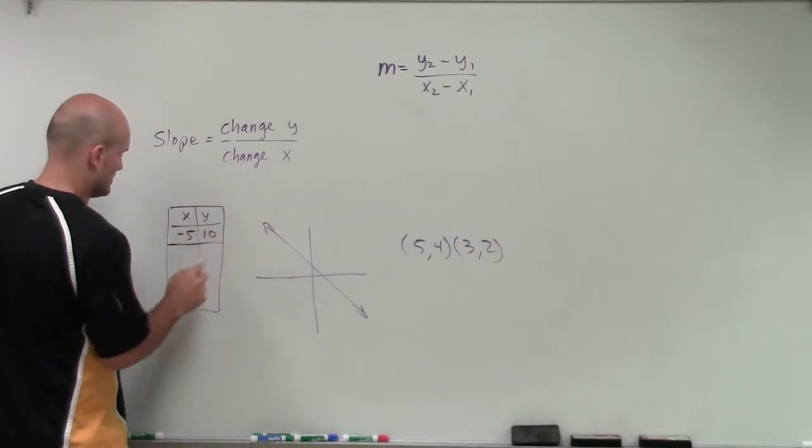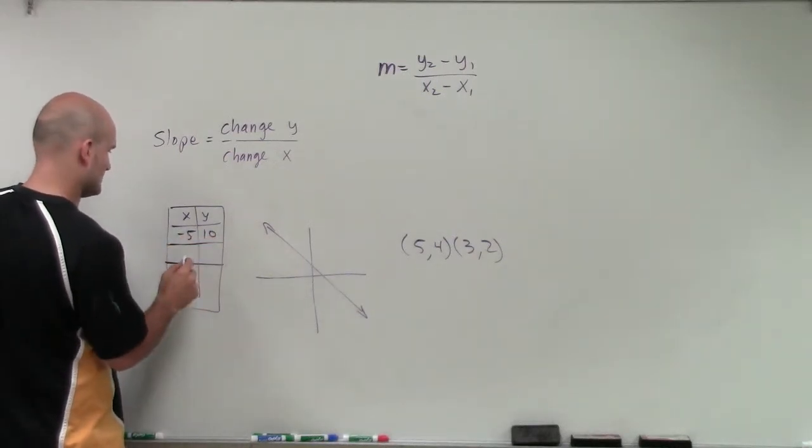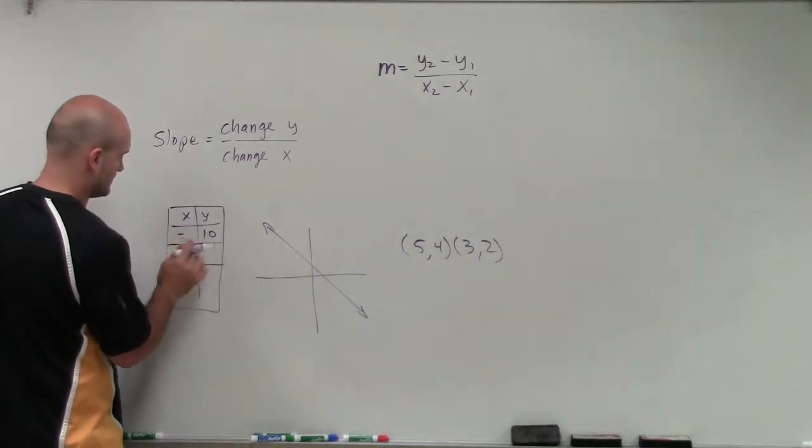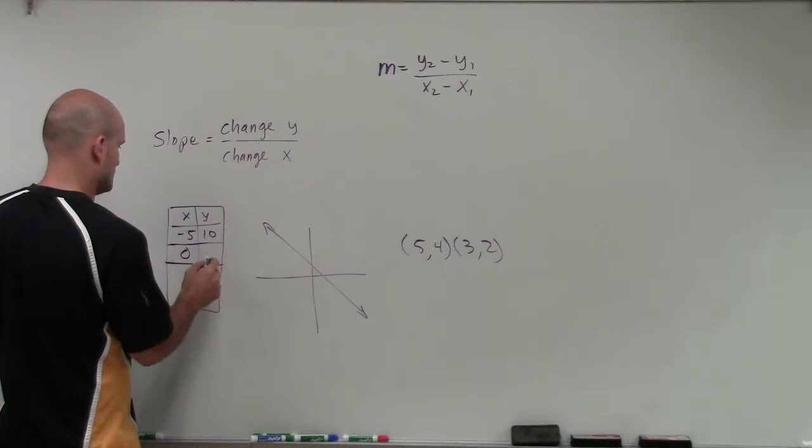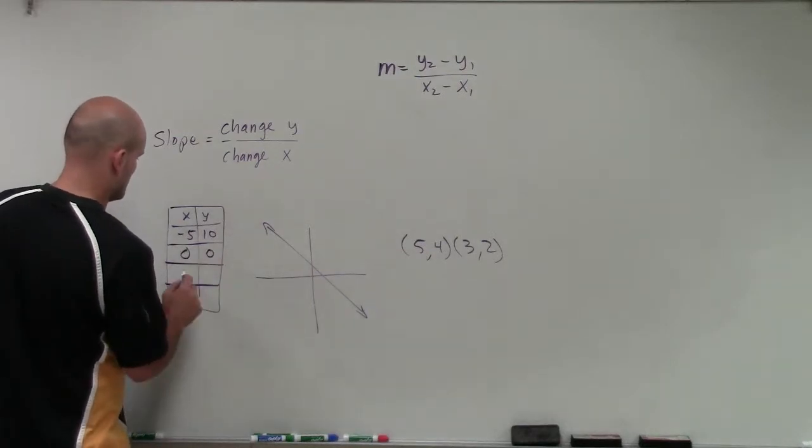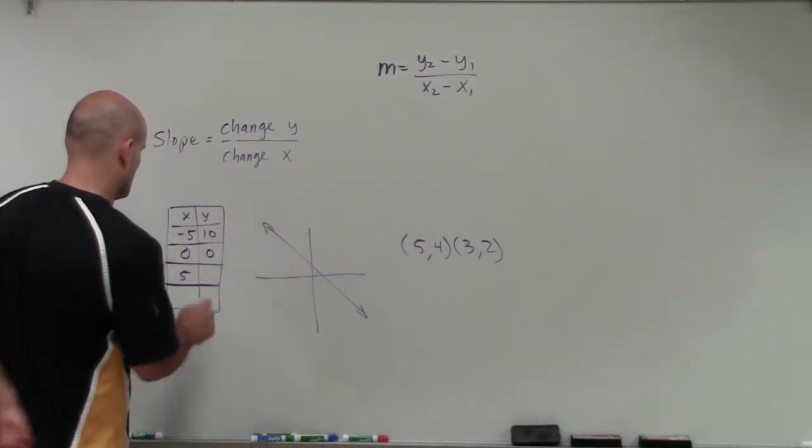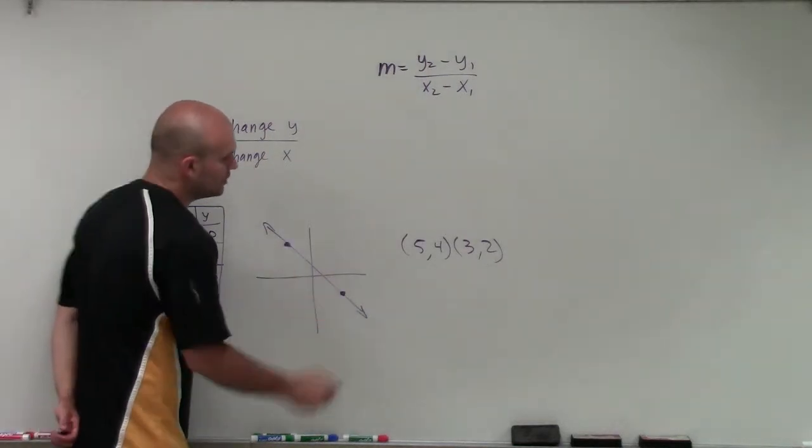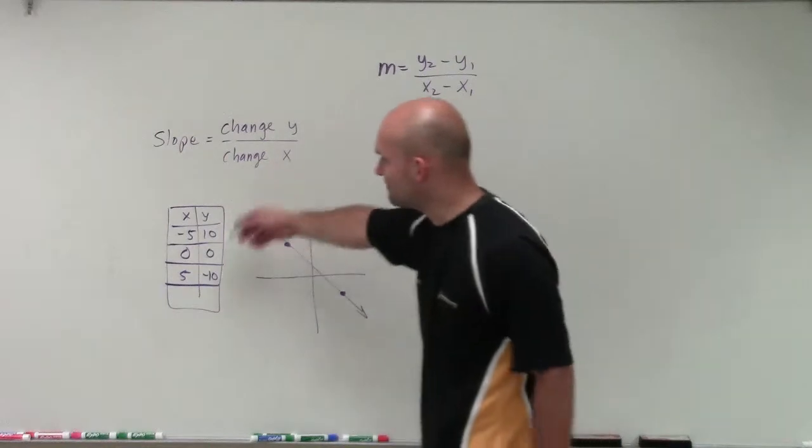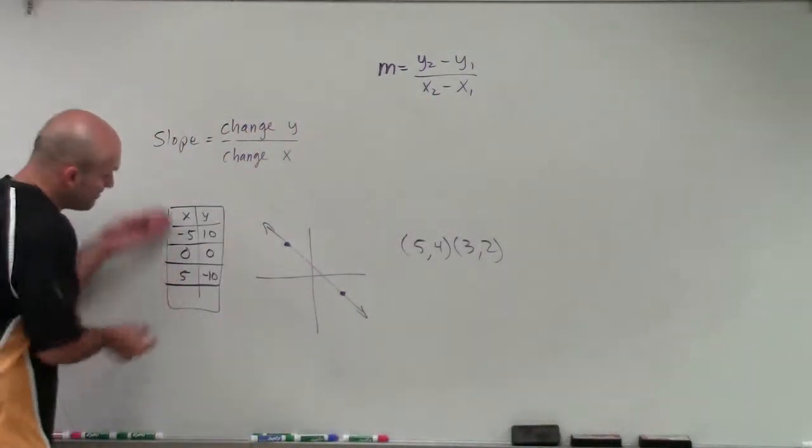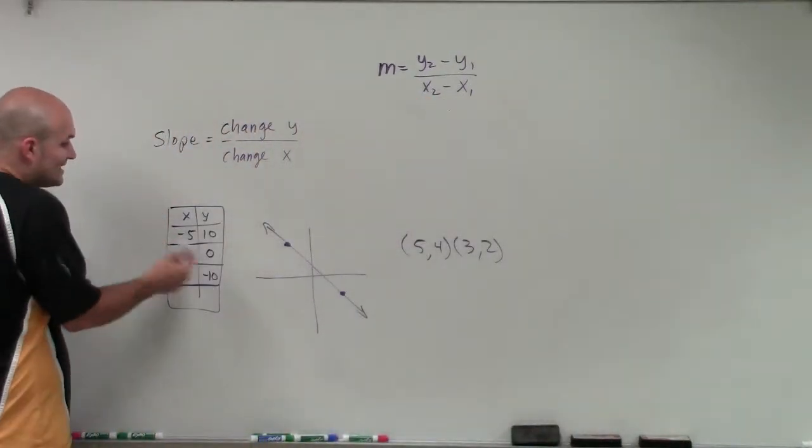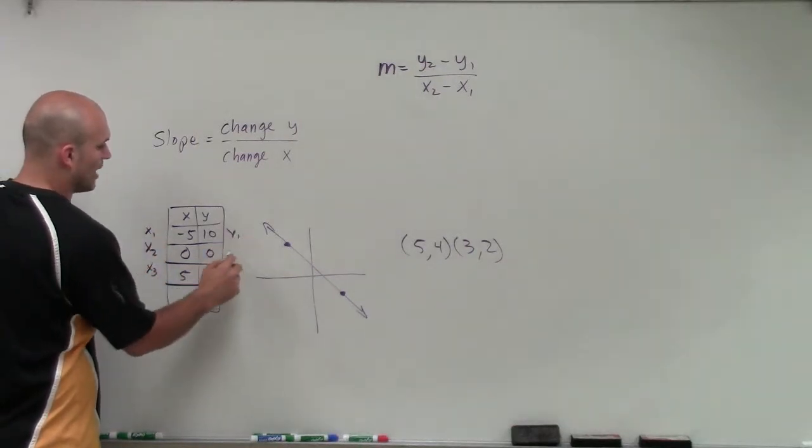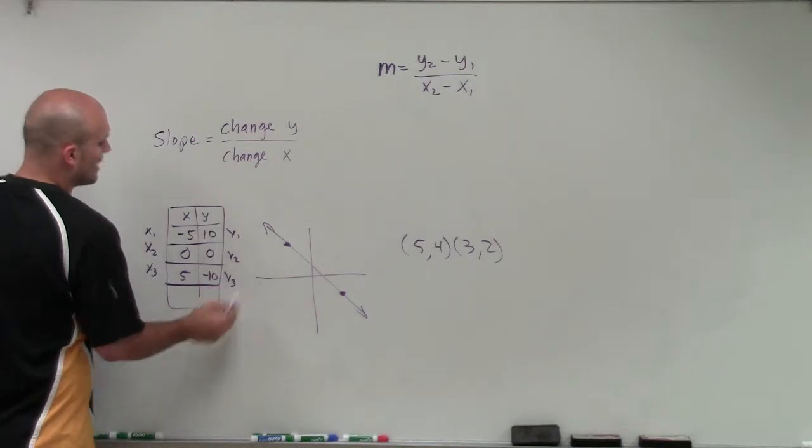Let me just pick some values here. When we're looking at coordinate points, we know these are all x values, but they're different x values. So I can label them as x1, x2, x3. Therefore, this would be y1, y2, and y3.